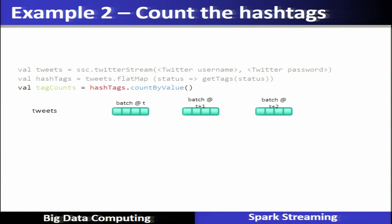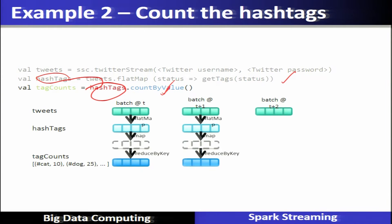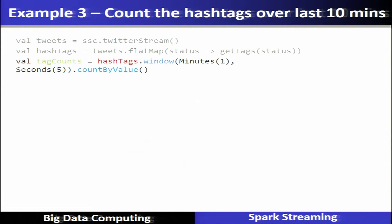Let us count the hashtags in this example. Once we have the hashtags available via the Spark streaming system, we perform an action as output. The output here is countByValue, which counts how many occurrences of each hashtag are present in the stream processing data.